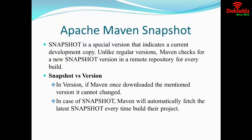A snapshot is a special version that indicates a current development copy. Unlike a regular version, Maven can check for a new snapshot version in a remote repository for every build. Whenever you are going to develop a project, after completion it will be in a beta version, and after that the original version will be deployed. While working on a project, we will be creating a copy of the project — that we call a snapshot.